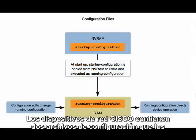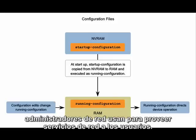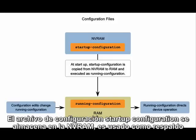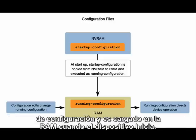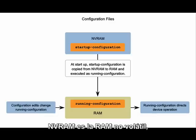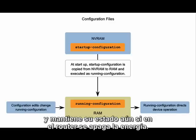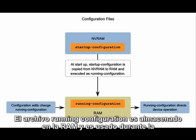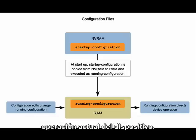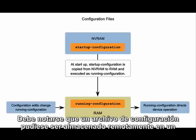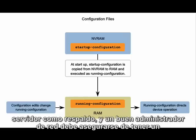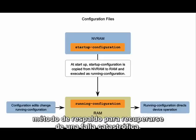Cisco network devices contain two configuration files that network administrators use to provide network services to users. The startup configuration file, stored in NVRAM, is used as the backup configuration and is loaded into RAM when the device is started. NVRAM is non-volatile RAM and retains its data even when the router is powered down. The running configuration file is stored in RAM and is used during the current operation of the device. A configuration file may also be stored remotely on a server as a backup, and a good network administrator makes sure they have a backup method to recover from a catastrophic failure.